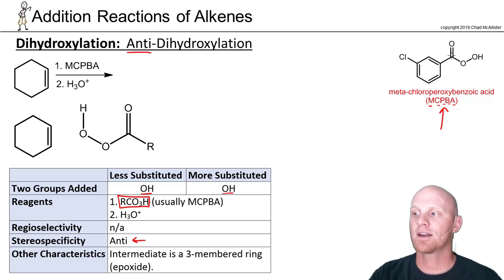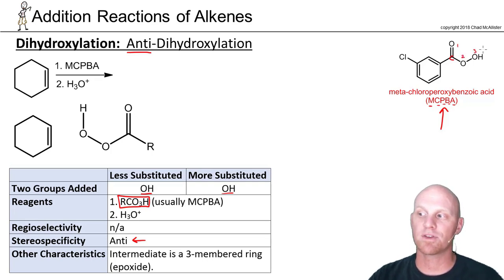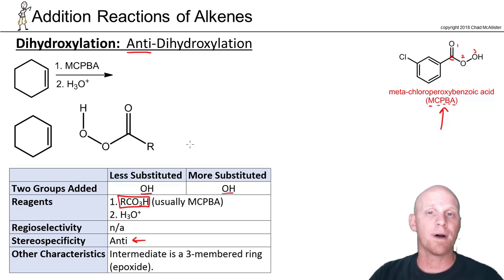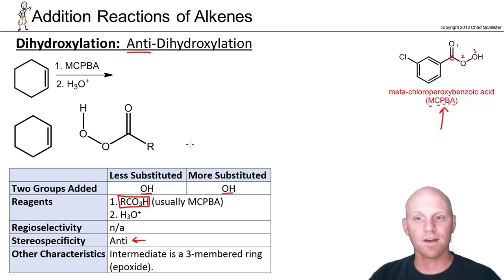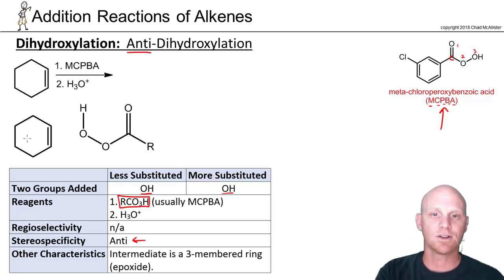You can see that peracid structure — it looks like a carboxylic acid with an extra oxygen. There's your carbon and then three oxygens rather than the normal two for a carboxylic acid. It turns out these things form what are called epoxides in step one, and then step two is going to open that epoxide.